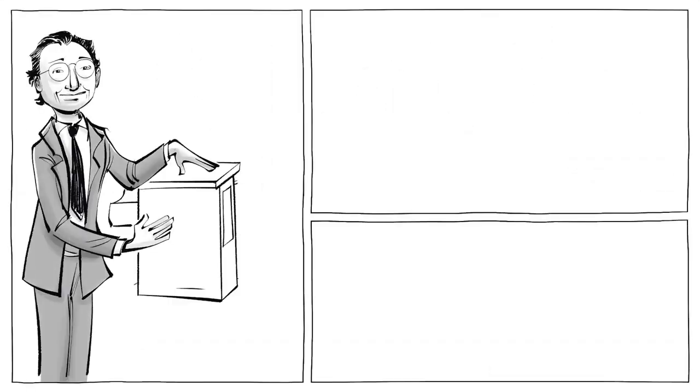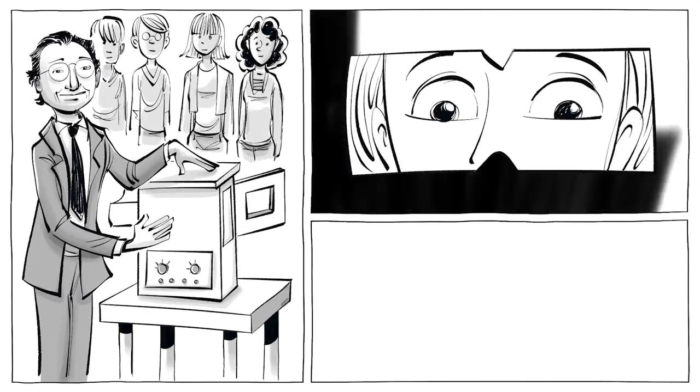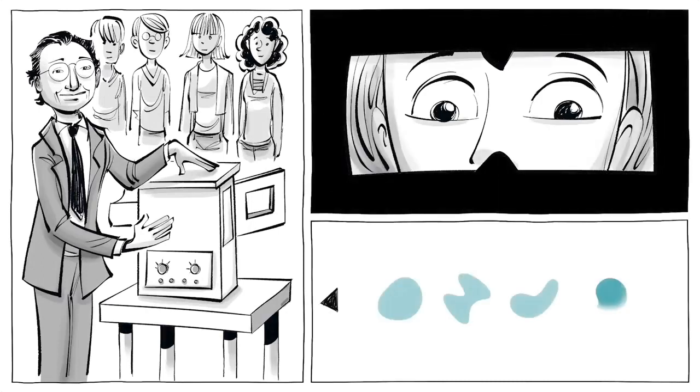Using a tachistoscope and a group of people, he exposed each person to a series of random shapes that changed so quickly that it was impossible to discern that some were repeated.